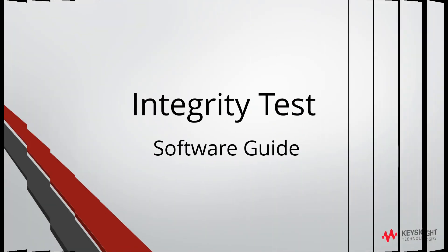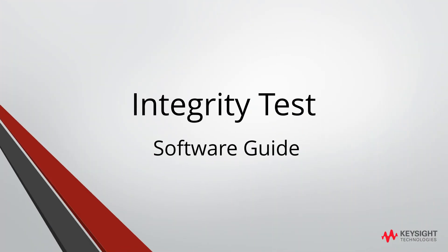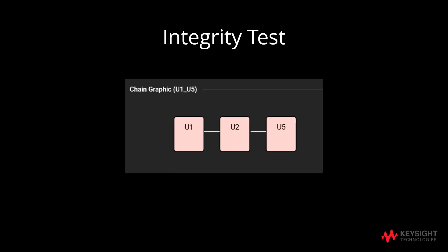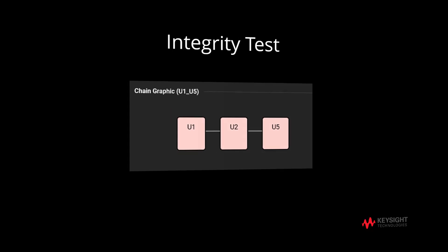We will now proceed with the integrity test software guide. To check the integrity of the chain, we will go to project explorer, followed by double clicking on chain. The chain will then be reflected on the chain graphic.